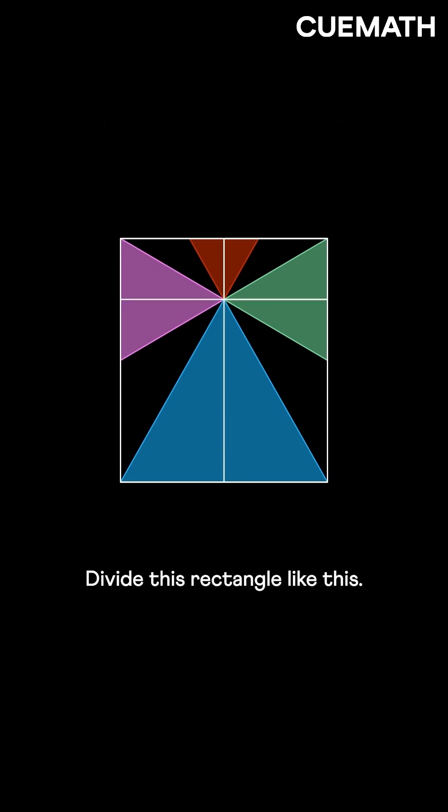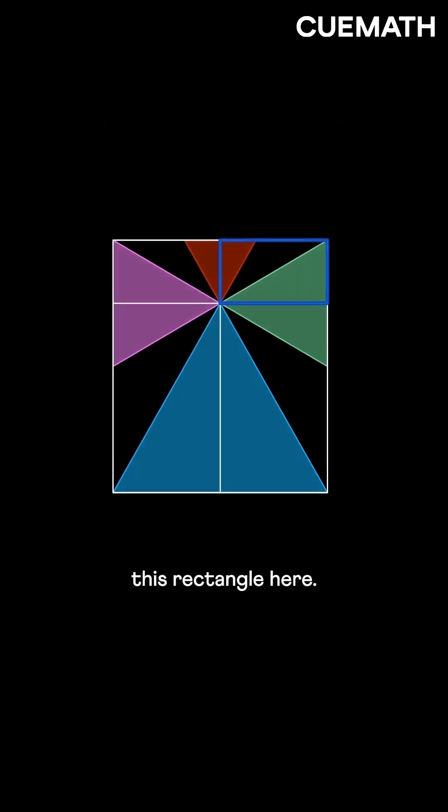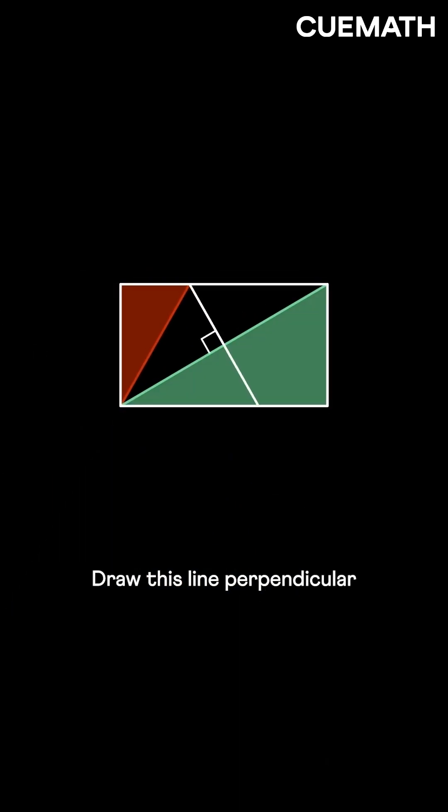Divide this rectangle like this. Let's focus on this rectangle here. Draw this line perpendicular to the diagonal of the rectangle and join this.